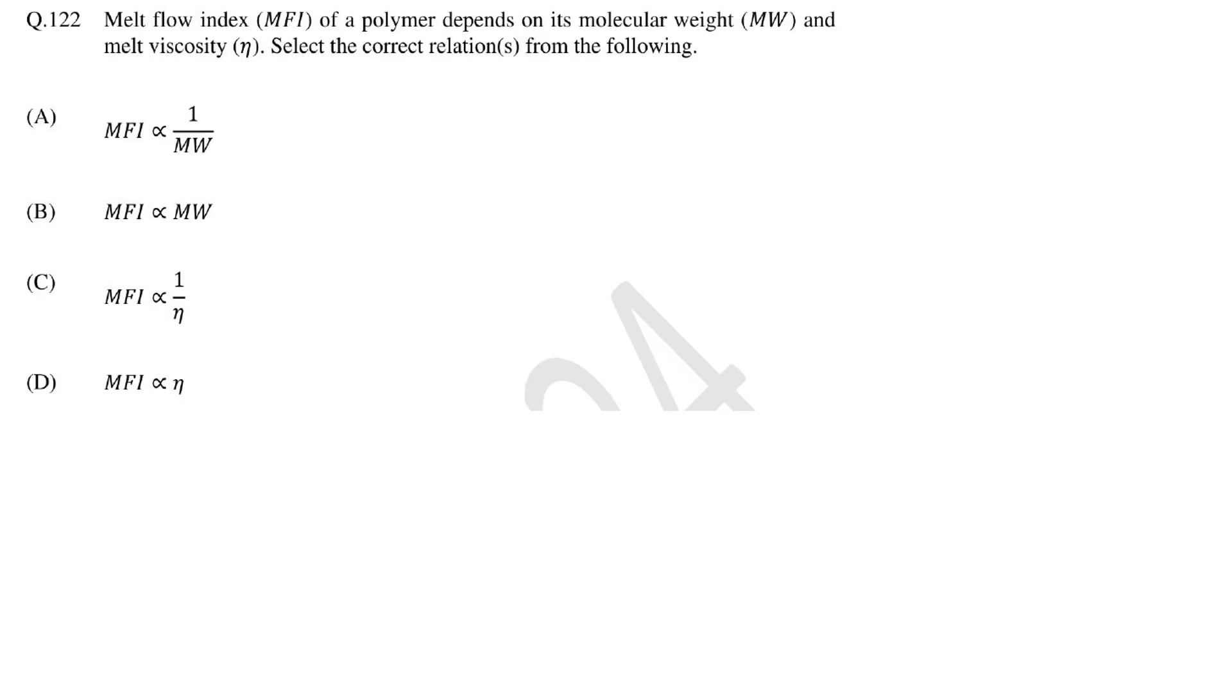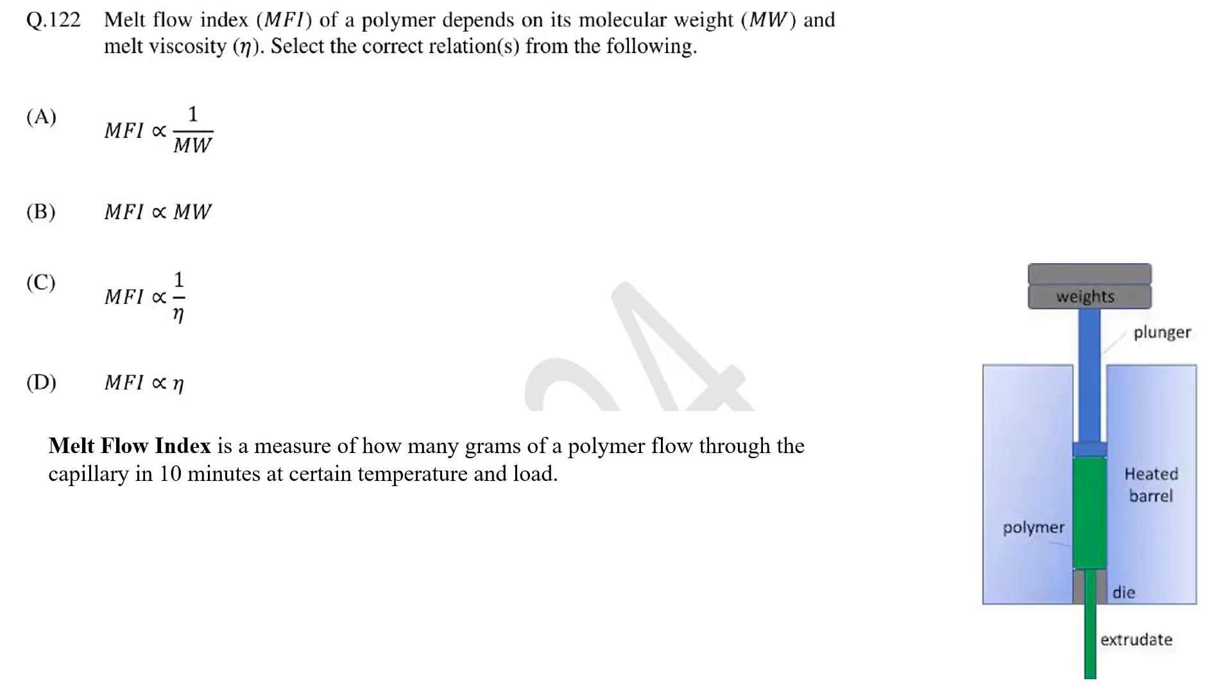In this question we need to find the relationship between melt flow index, molecular weight and viscosity. This is a multiple choice question too. To answer this question first we need to understand what is melt flow index. Melt flow index is a measure of how many grams of a polymer flow through the capillary in 10 minutes at certain temperature and load. Higher the MFI value that means viscosity is low. So the material coming out through the die is high.